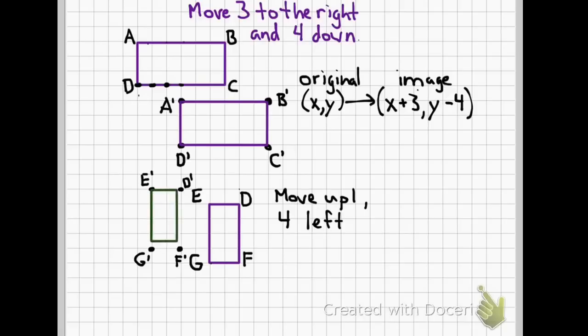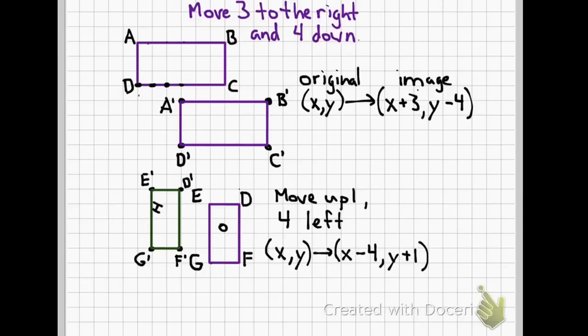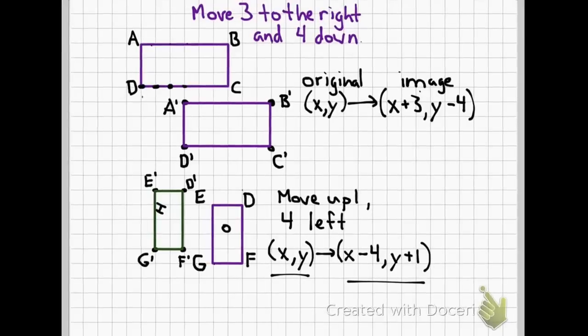We'll change our color for our image. Now we need to write our translation. We started at x, y with our points. And we moved four to the left, which would be our x direction. Realize left and right is x, up and down is y. So four to the left is actually negative four. All of the x values would actually shift back four. And then we moved up one. So all the y values would go up one. Our original is x, y. And then our image is x minus four, y plus one.